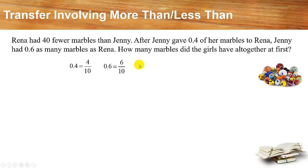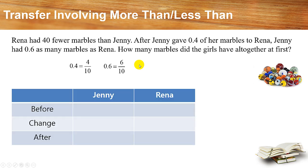Now we can draw a table to help us organize the information. We've got Jennie and Rina, and the columns are Before, Change, and After.